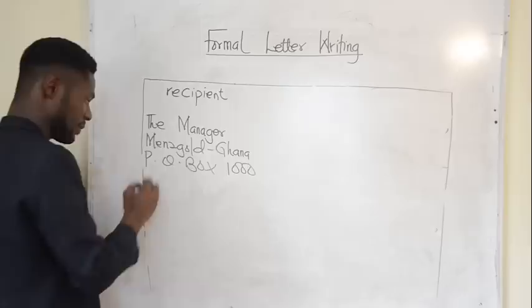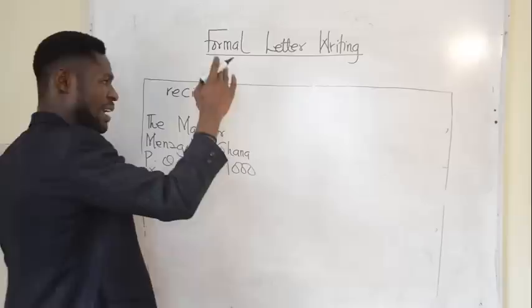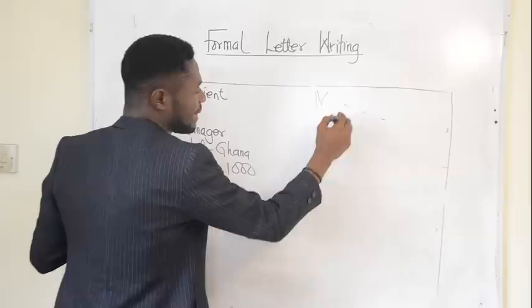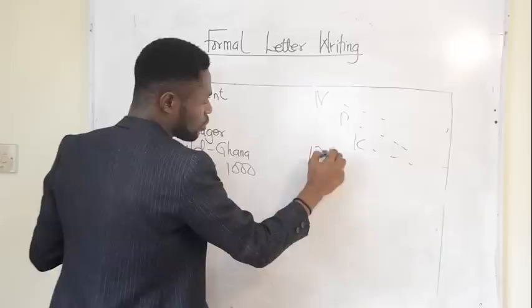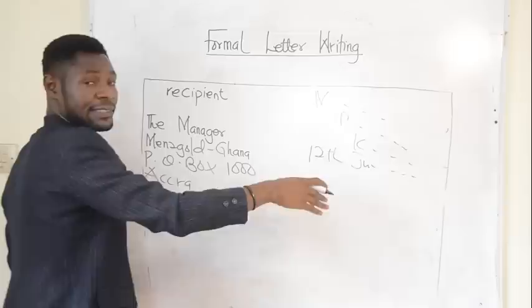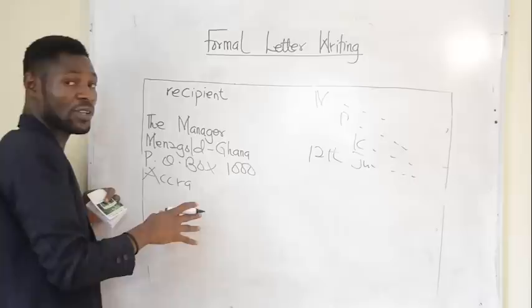Note that you cannot slant or indent the recipient's address. When we wrote the personal address in the indented style — Modern [institution], P.O. Box, then the date underneath — we call that the indented format. But if the personal address is indented, it doesn't mean the recipient's address should also be indented. It's not acceptable. It should always be fixed and blocked.